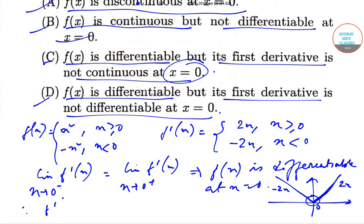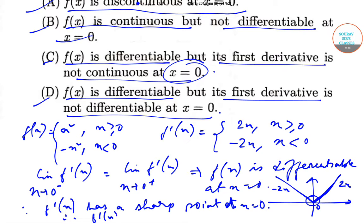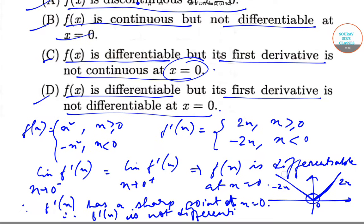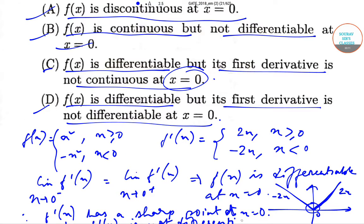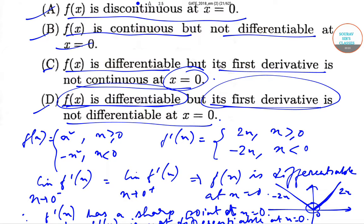f'(x) has a sharp point at x = 0. Therefore f'(x) is not differentiable at x = 0. So we can definitely say that f(x) is differentiable, but its first derivative is continuous yet not differentiable at x = 0. So option D is the correct option.